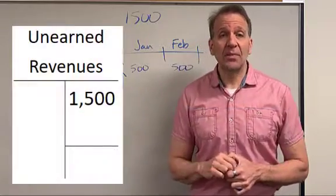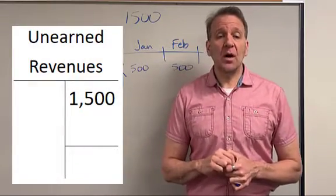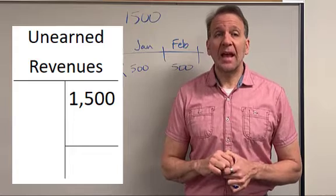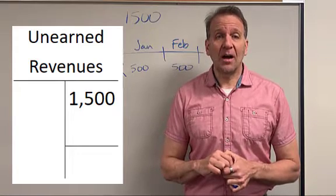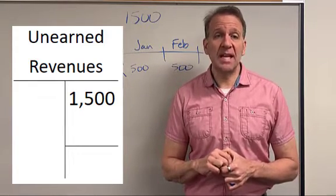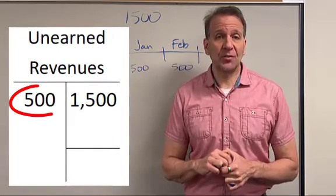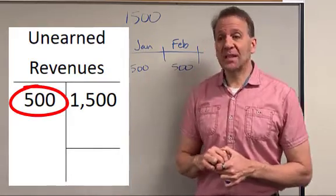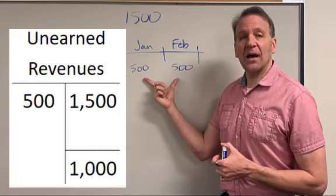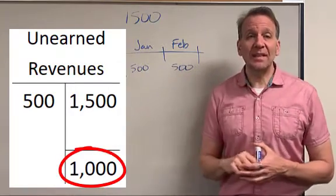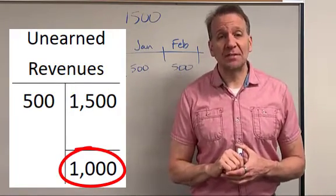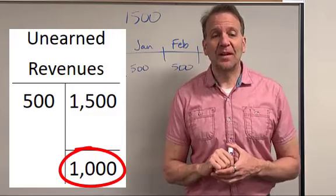Let's look at this from a T-account perspective. You can see the T-account on your screen — unearned revenue originally at $1,500. On December 31st we debited unearned revenue $500. So what's left? One thousand dollars, and you can see in that T-account that there is $1,000 remaining.